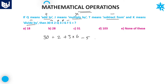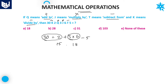We need to calculate the value of this expression. According to BODMAS, first priority is given to division: 30 divided by 2 equals 15. After that, multiplication: 3 into 6 equals 18.